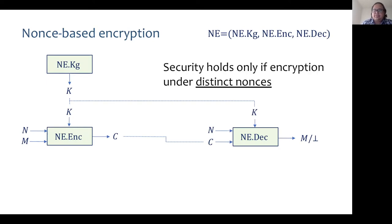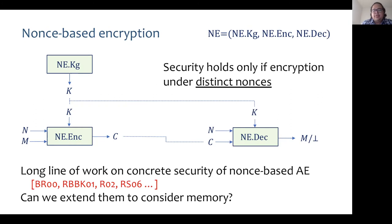A nonce-based encryption scheme guarantees security only if encryption is done under distinct nonces. There has been a long line of work proving concrete security of nonce-based authenticated encryption. These works, of course, ignored the memory of the adversary. Now the question is: can we extend them to take memory into account? The problem has already been very hard just for the case of confidentiality, without the additional property of integrity that we need for authenticated encryption.